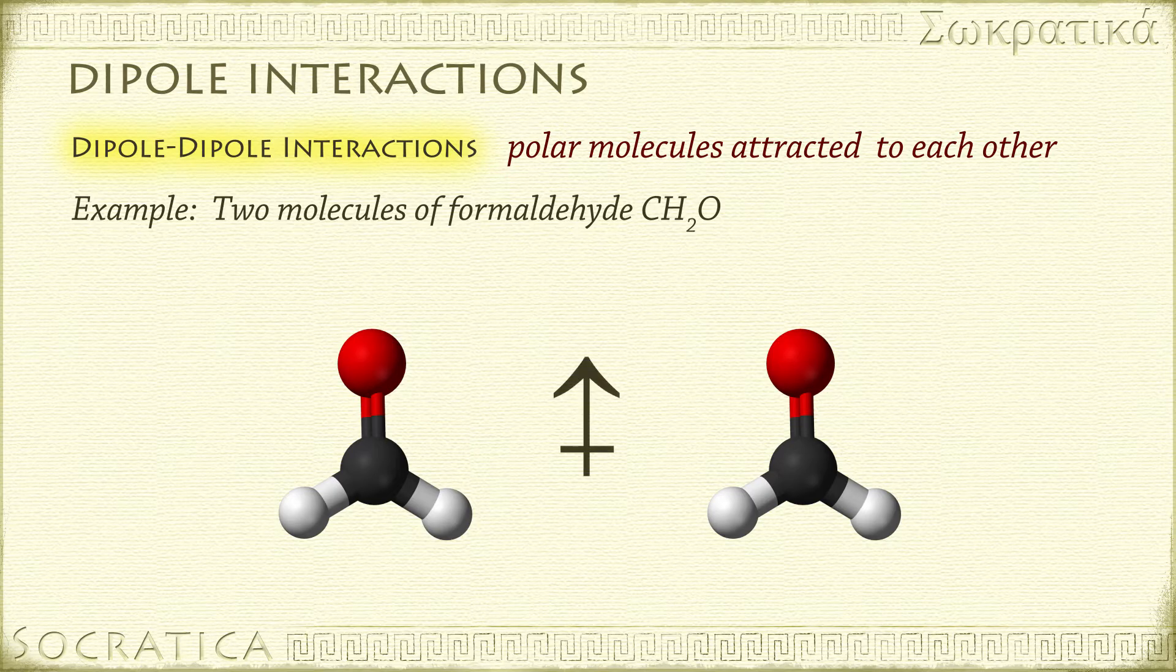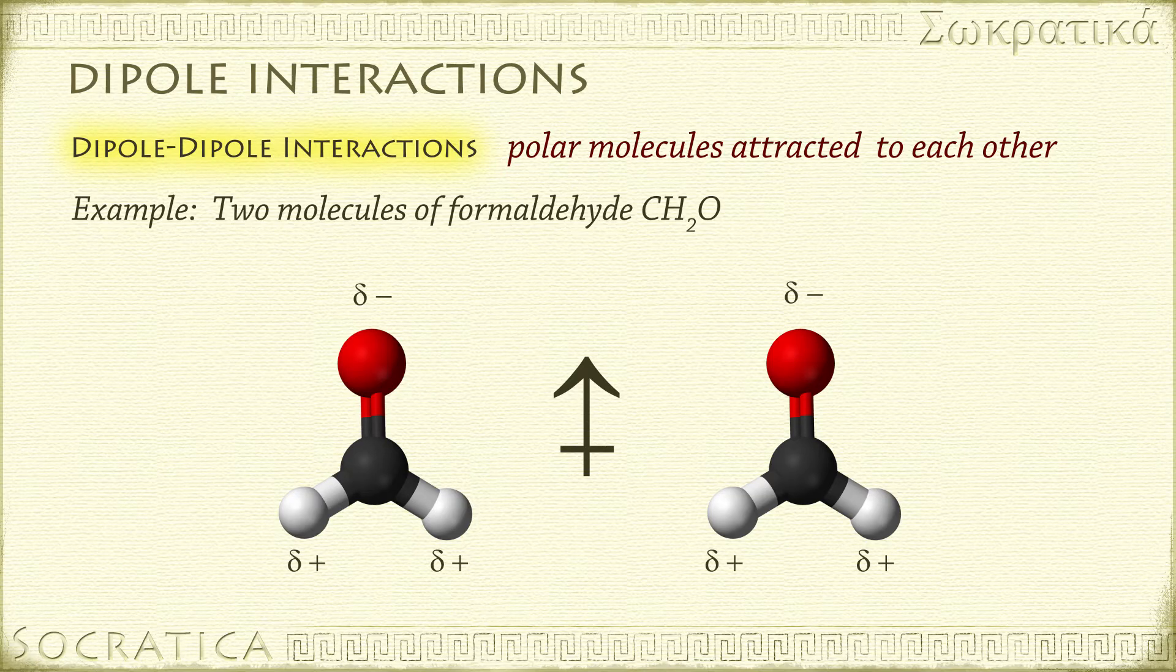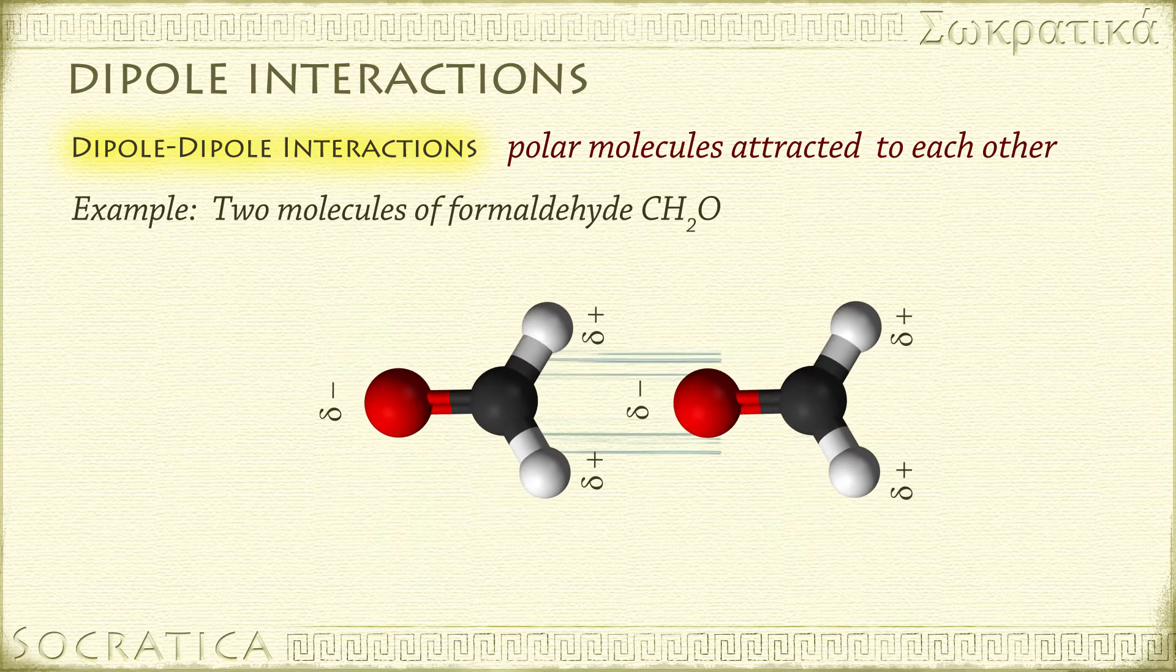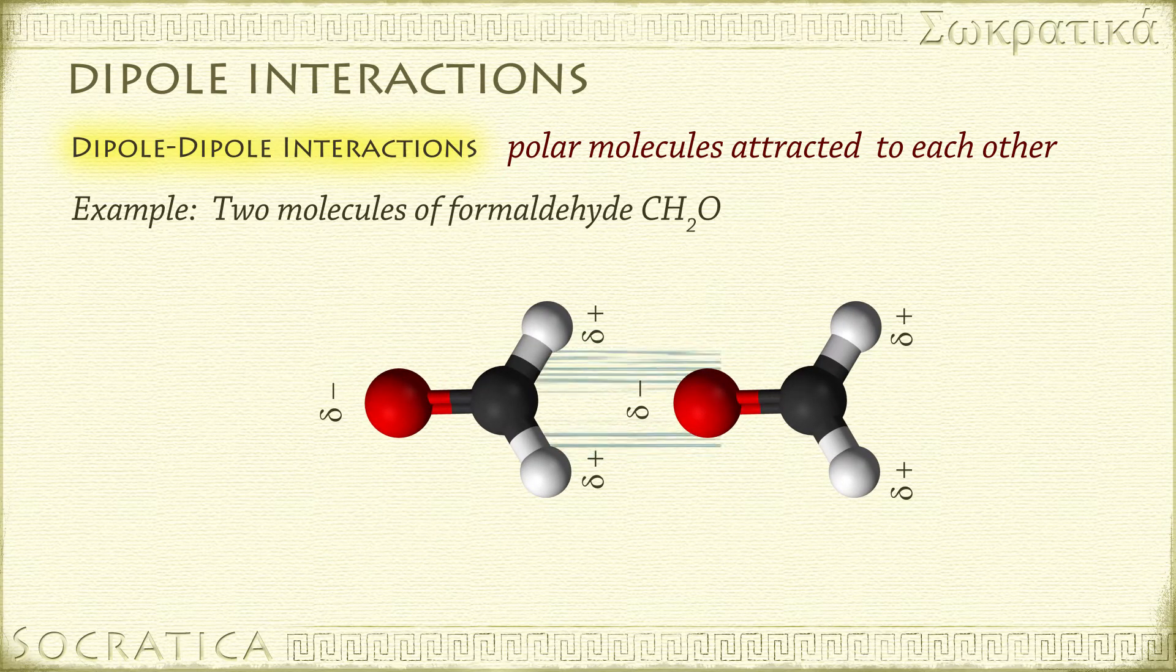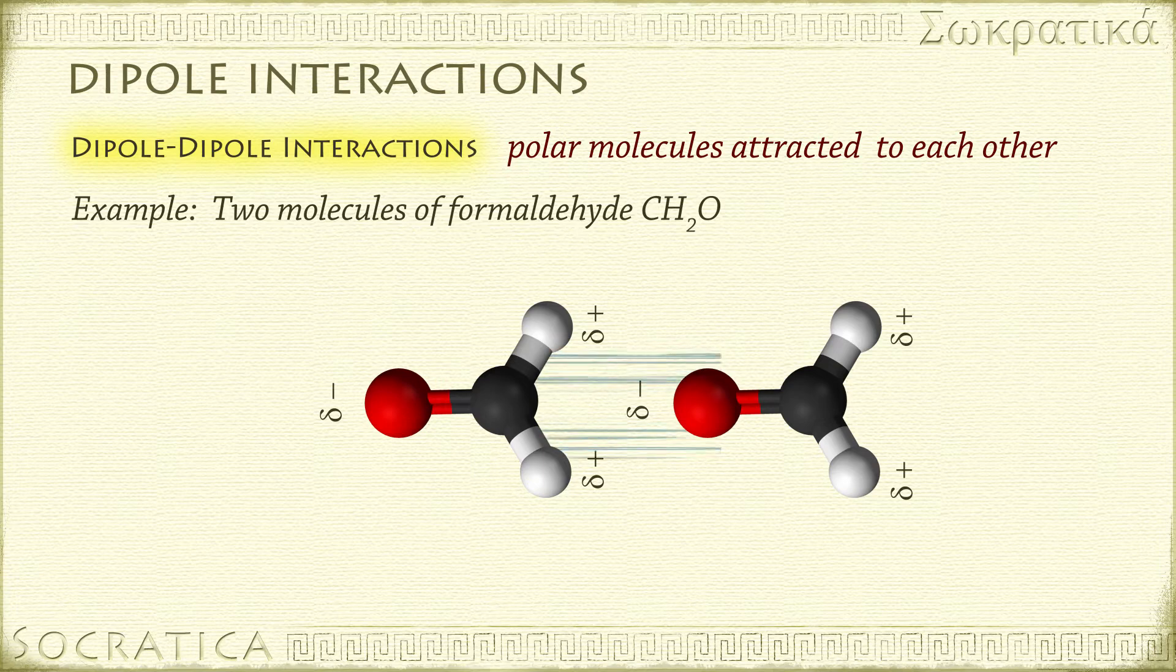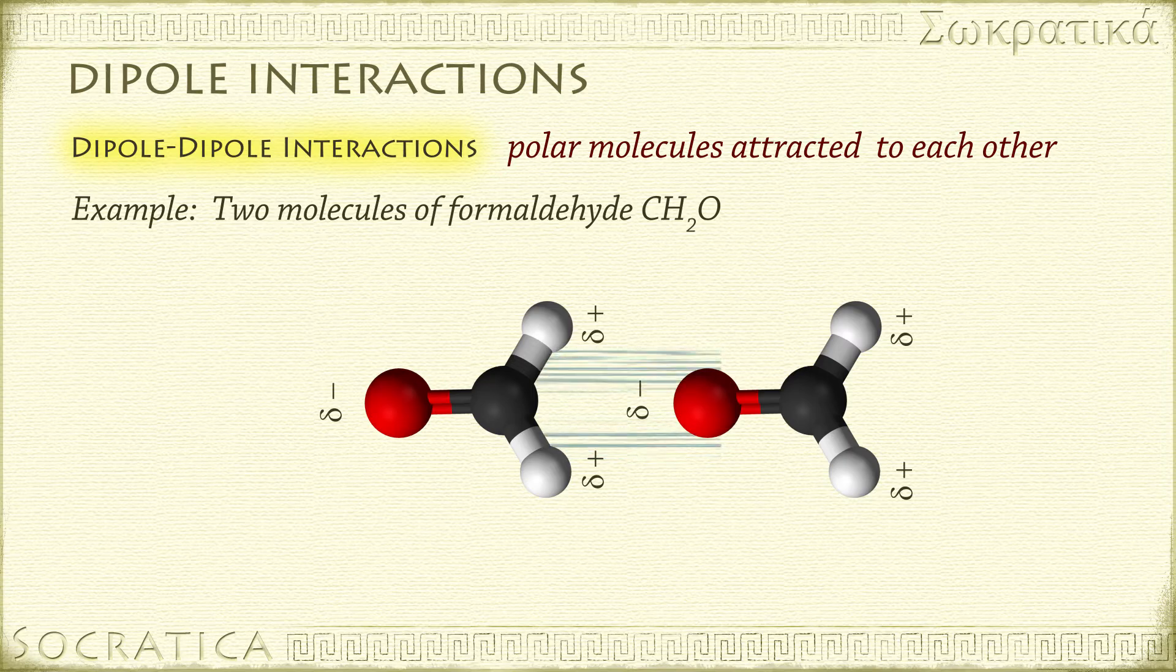Each of these individual molecules contains a polar covalent bond. The molecules have positive and negative ends, or poles. If two formaldehyde molecules come close together, the partial positive end of one molecule will be attracted to the partial negative end of the other molecule.